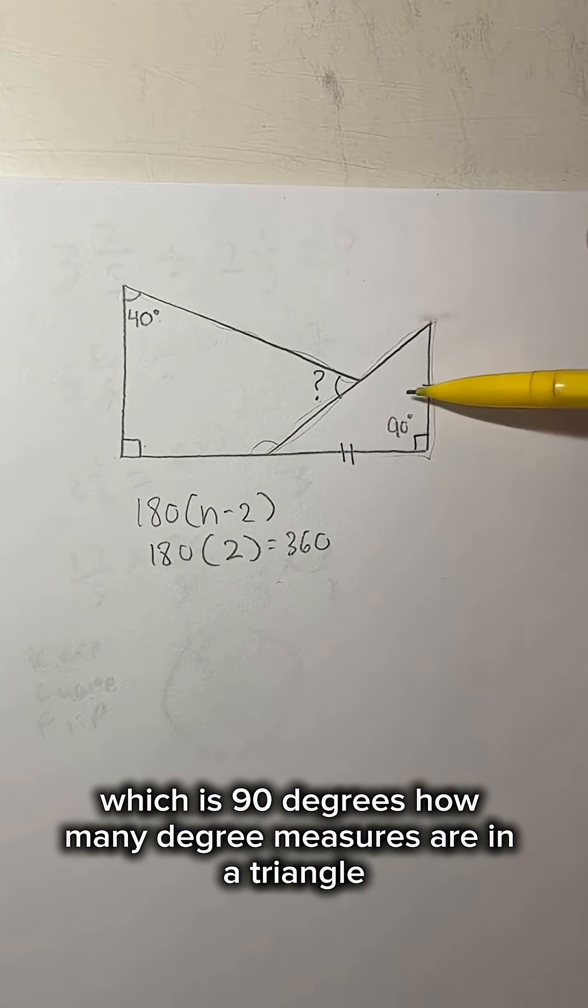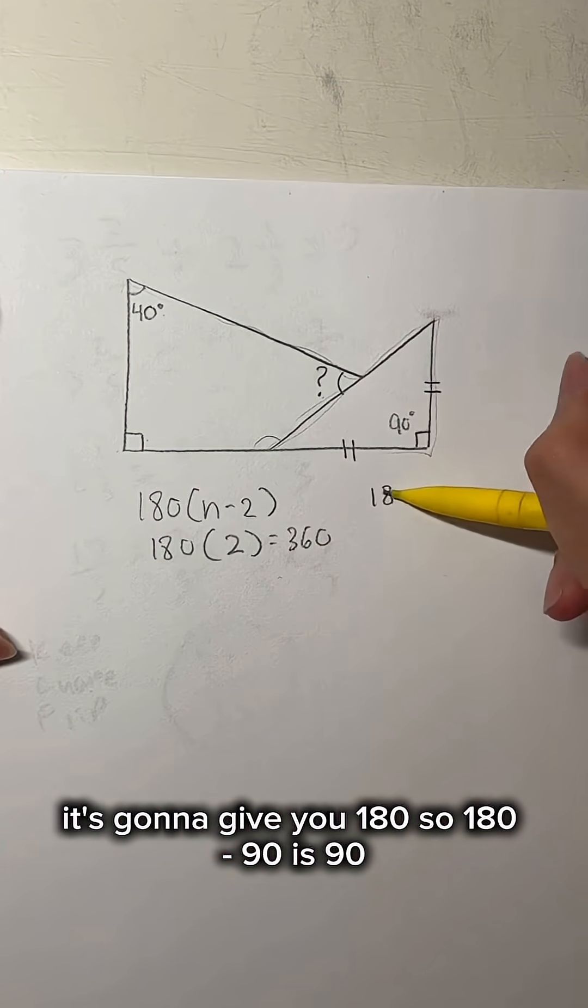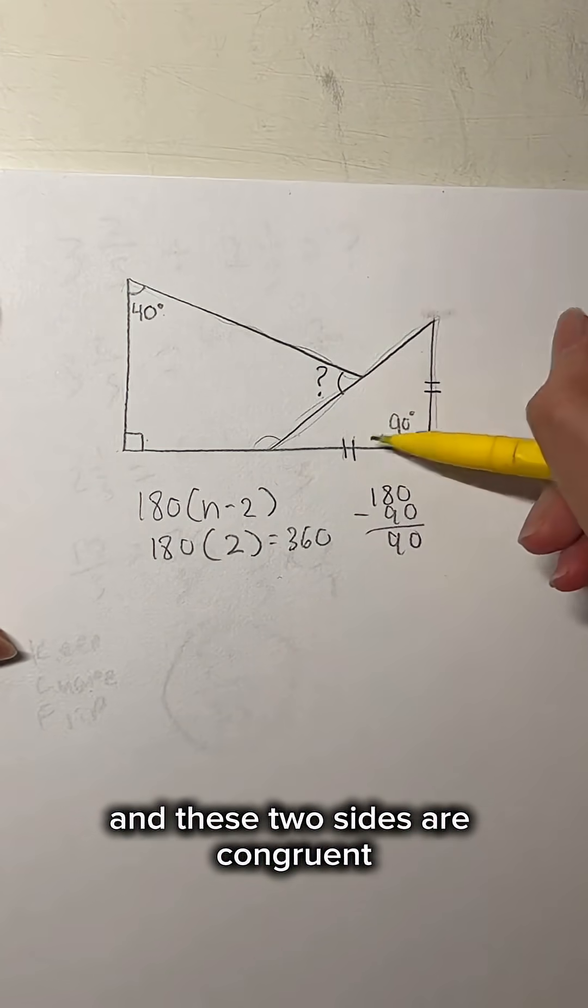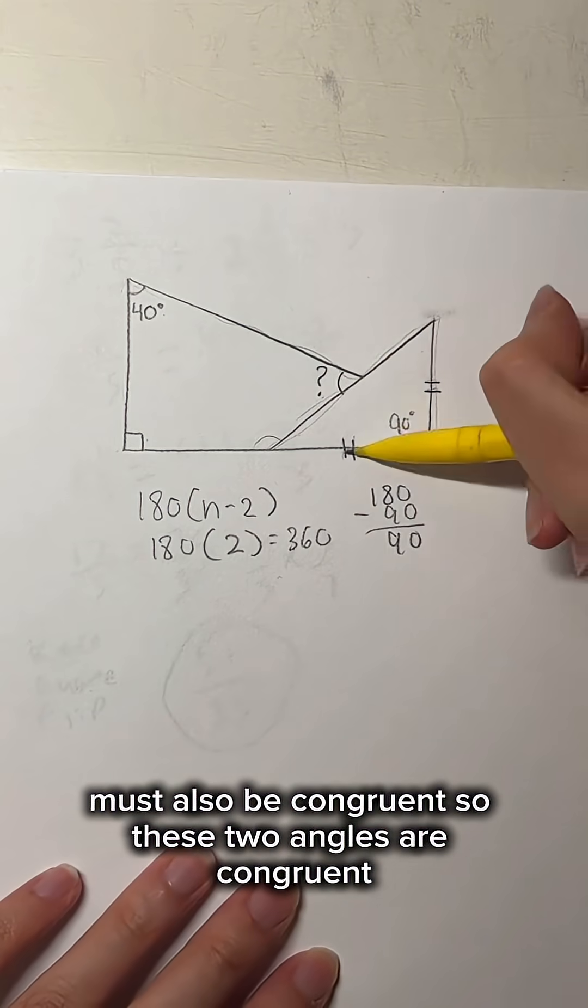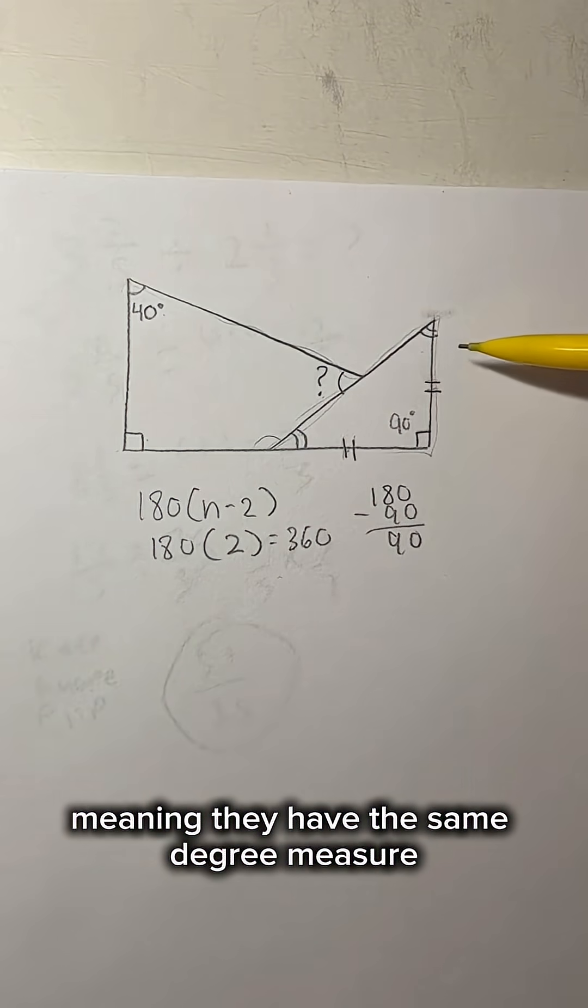How many degree measures are in a triangle? If you plug that into the formula, it's going to give you 180. So 180 minus 90 is 90, and that is going to be the sum of these two angles. These two sides are congruent, which means that the angles opposite to the sides must also be congruent. So these two angles are congruent, meaning they have the same degree measure.